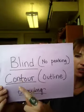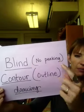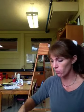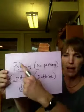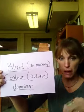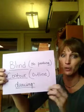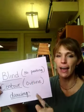Blind contour drawing — blind means there's no peeking. You're not looking at the paper that you're drawing on; you're looking only at the object that you are drawing. We're going to be doing our hands first, and then we'll talk about doing some other things. You are looking at your hand, following it closely with your eyes, but you're not looking at your paper as you're drawing.